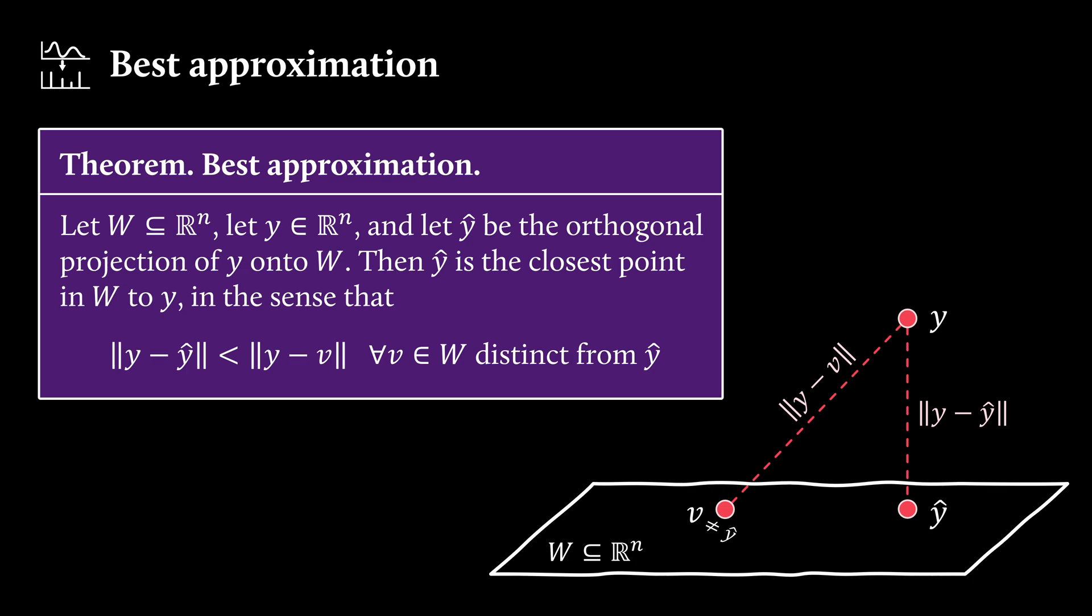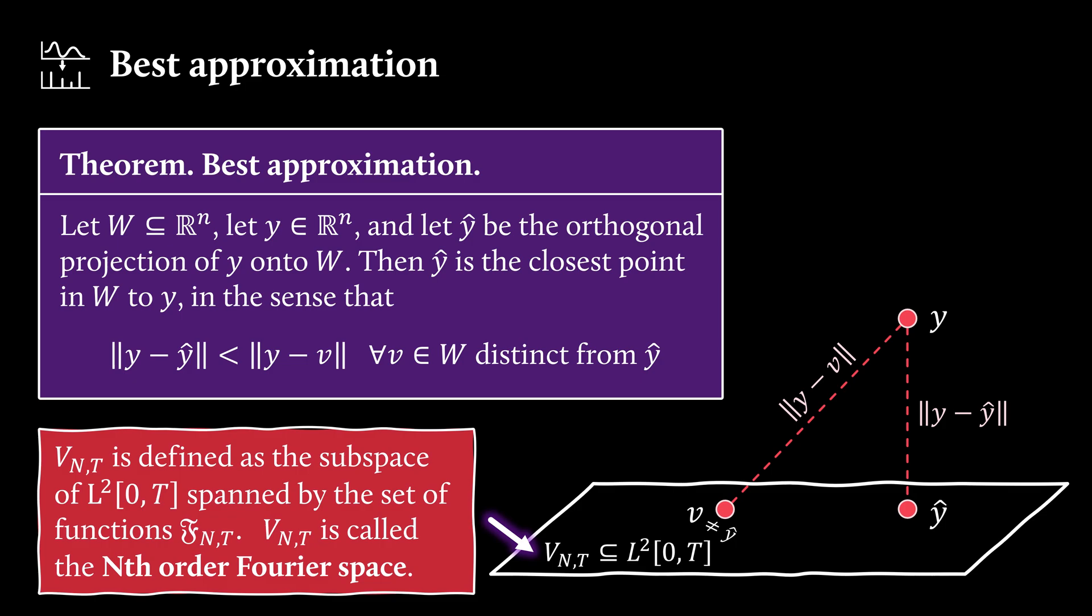then this is smaller than the distance from y to any other point v living in w. And now what we can do is instead of considering w as a subspace of Rn, we use the vₙₜ we've just defined as the subspace of all square integral functions.